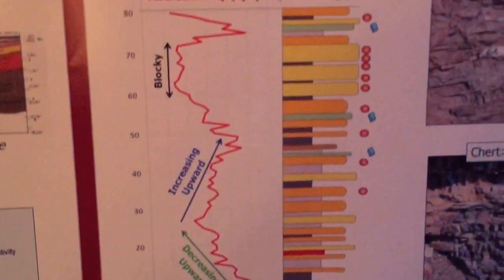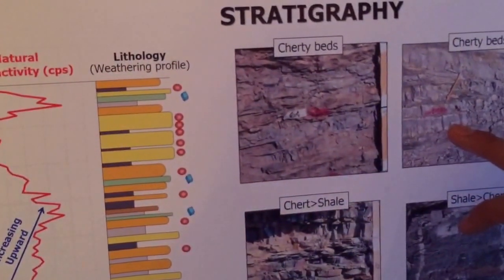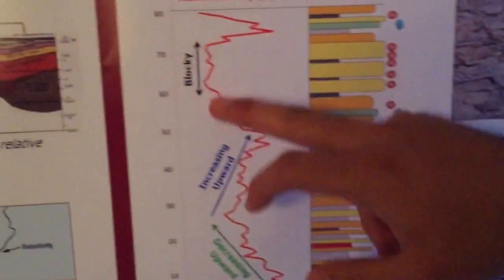And finally, we have a compacted, cherty bed in the blocky patterns. There's no variation in the natural radioactivity profile as you can see here.